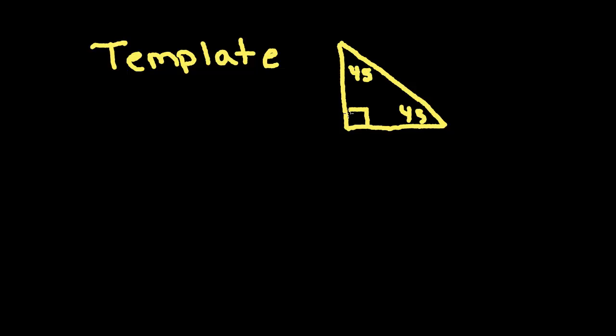Now, notice it's an isosceles triangle, which means base angles are equal, and that would also mean that the two sides are equal. So if this side is x, this side must also be x. And the third side, the hypotenuse, if you were to use the Pythagorean theorem, you would find that the hypotenuse comes out to be x square root 2.